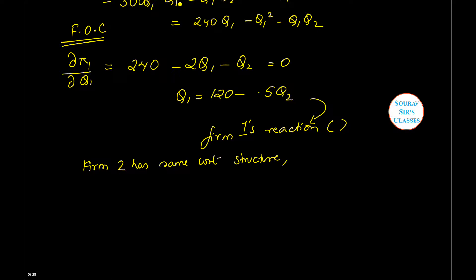Firm two's reaction function will be given by Q2 = 120 - 0.5Q1. Now let me mark these two equations - this as one and this as two. This represents firm two's reaction function.